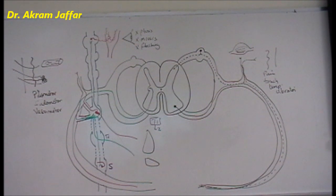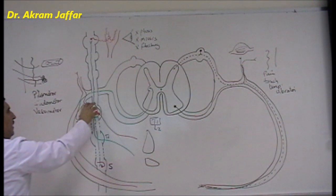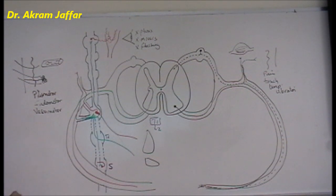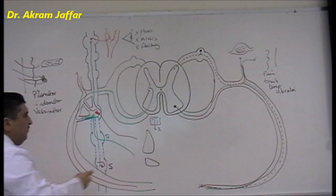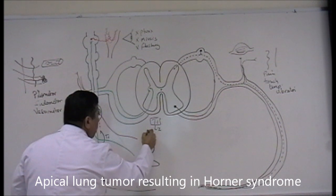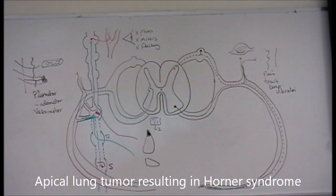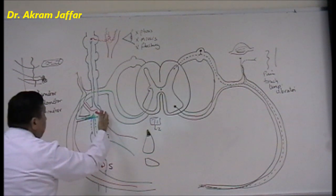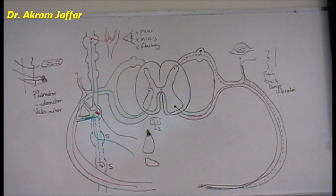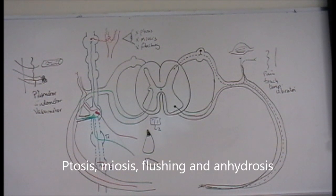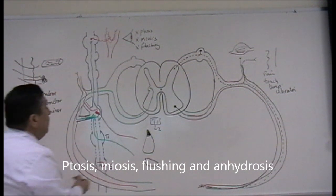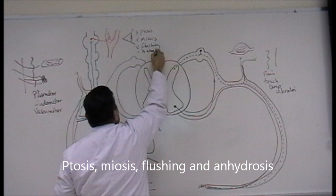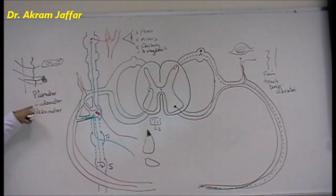This combination is called Horner's syndrome. It usually results from destruction of the sympathetic trunk in the lower neck or upper thorax. For example, a tumor affecting the apex of the lung may invade the sympathetic trunk located behind it, causing destruction of the superior thoracic ganglia. This destroys the ascending preganglionic fibers supplying the head, and the patient presents with ptosis, miosis, flushing, and anhydrosis — because these sympathetic fibers are also sudomotor.